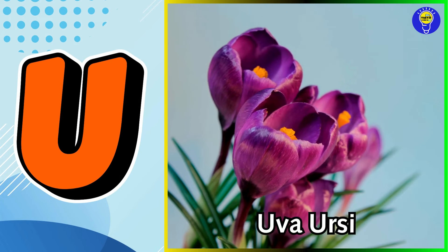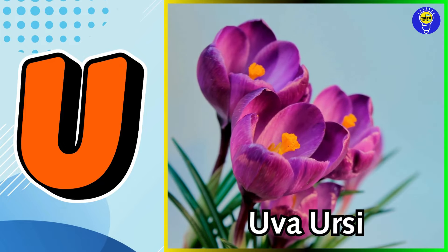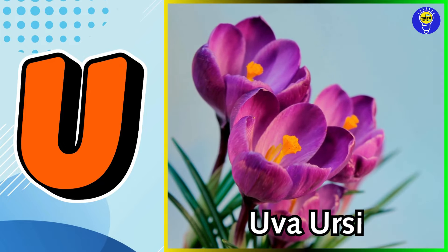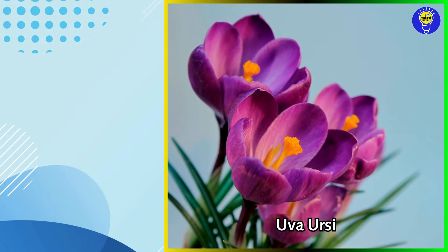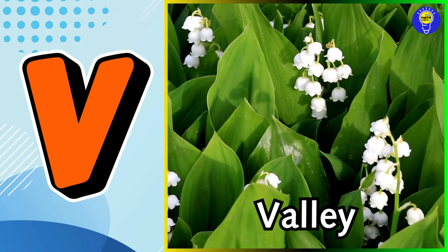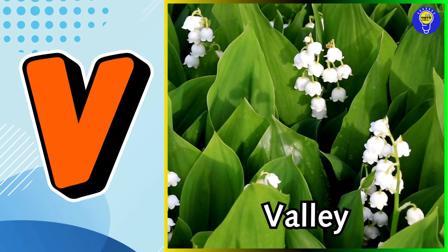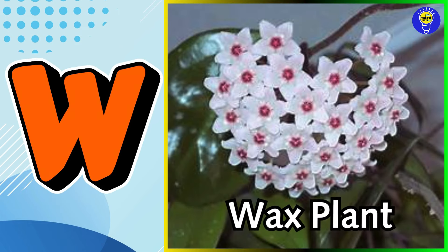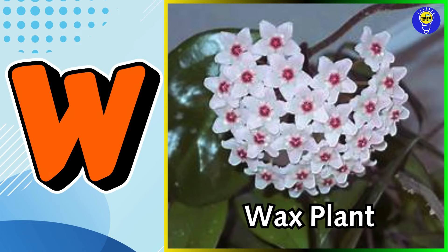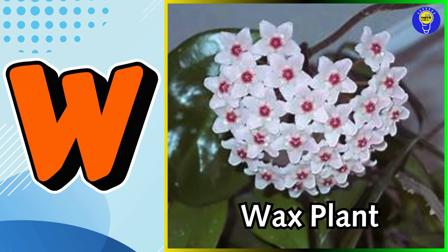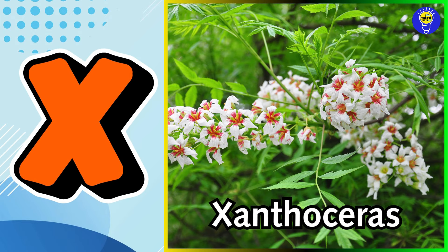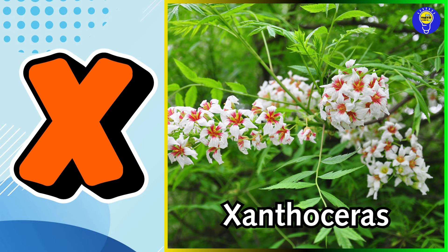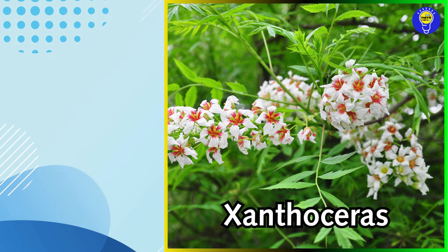U is for uva ursi flower. V is for valley flower. W is for wax plant flower. X is for xanthoceros flower.